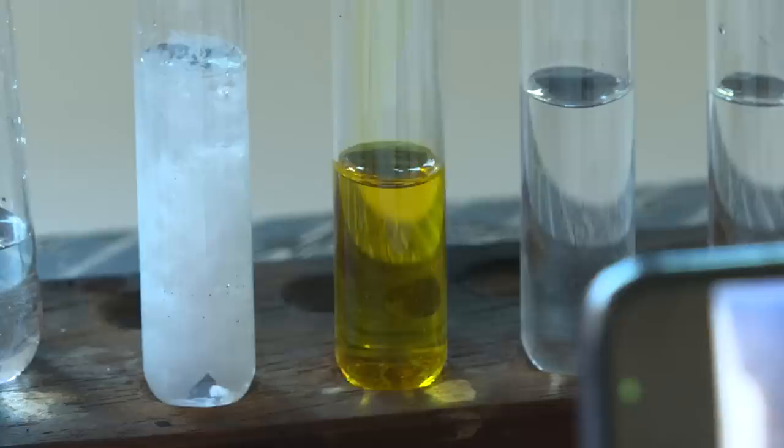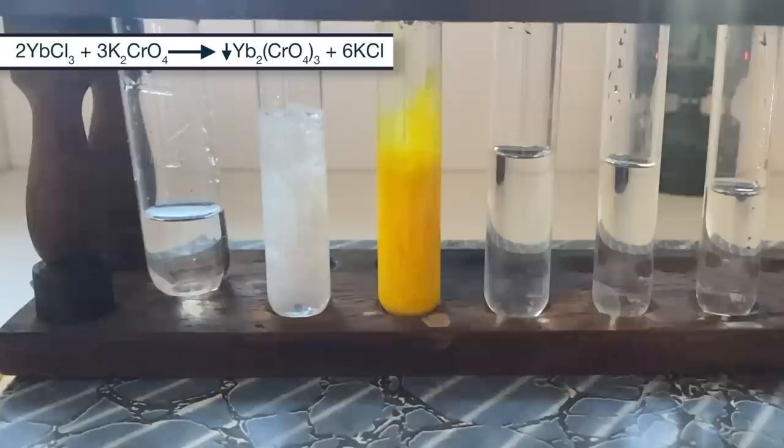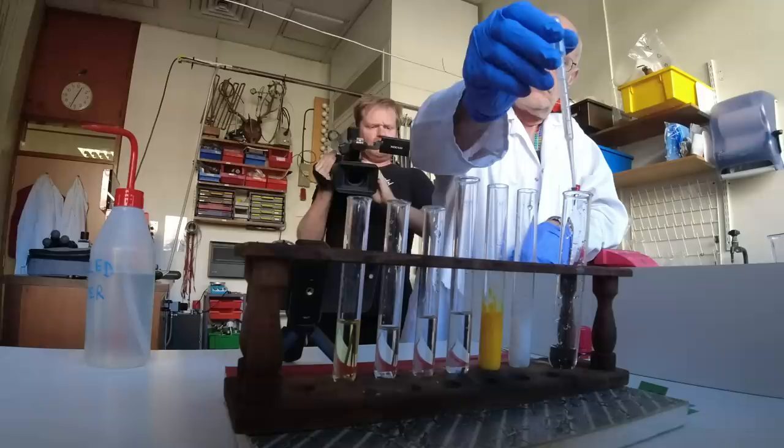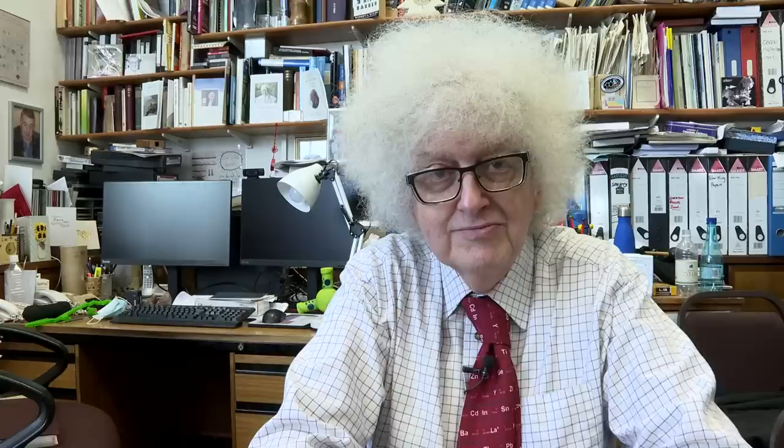Then came potassium chromate, which is yellow, and there was a really nice precipitate of yellow ytterbium chromate. I'd really quite expected that because most chromates are insoluble. We then tried sodium sulfide, which didn't produce any precipitate at all. Brady thought that was quite exciting. Professor was wrong.